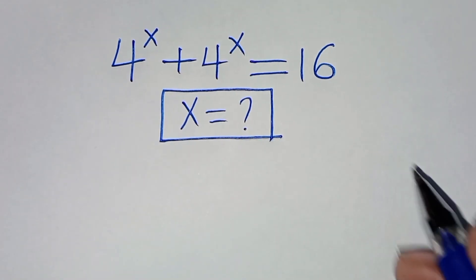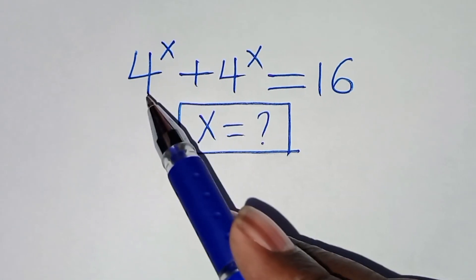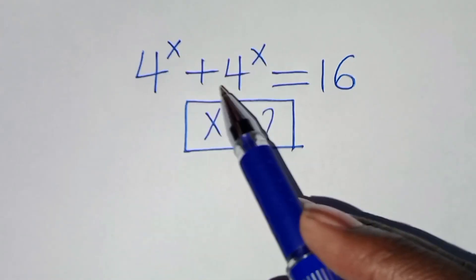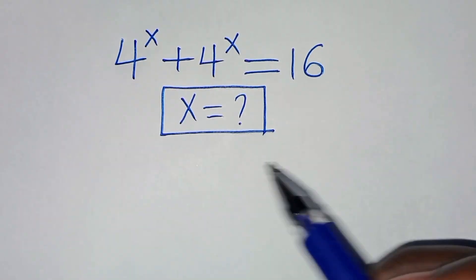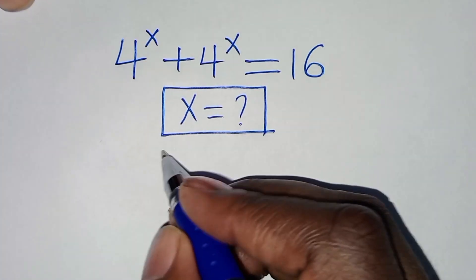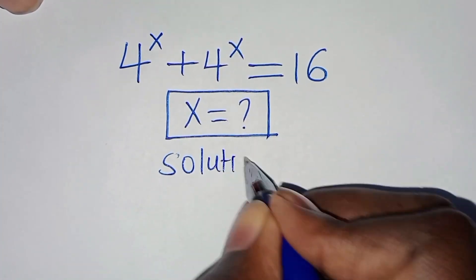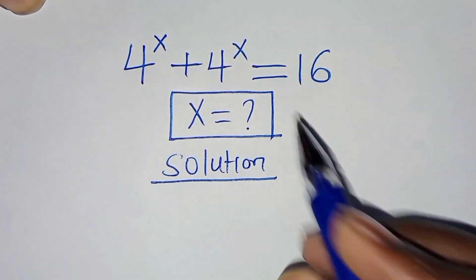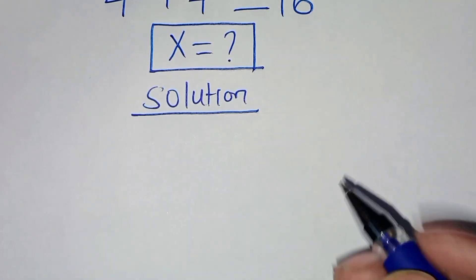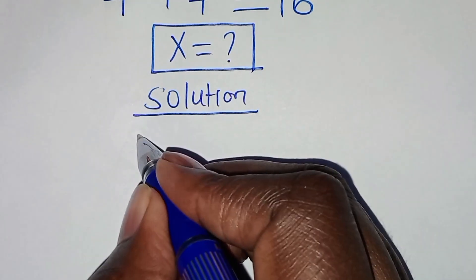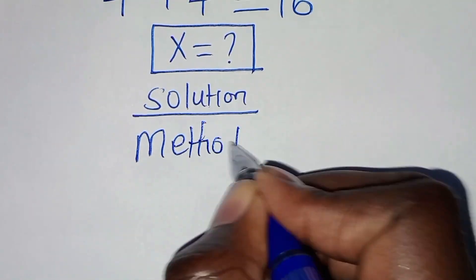Hello everyone, you are welcome to solve this nice exponential equation, which is 4 to the power x plus 4 to the power x, equal to 16. What is the value of x? We are going to solve this exponential equation by applying two methods. Let's start with method 1.